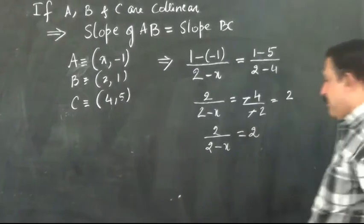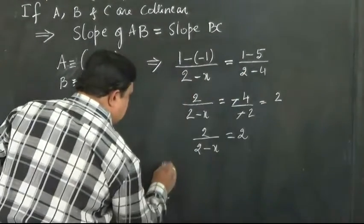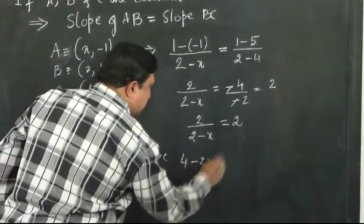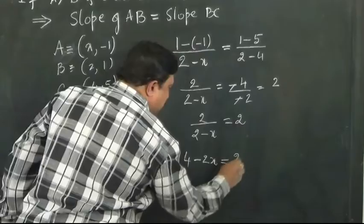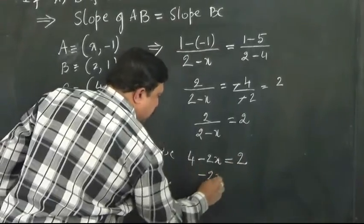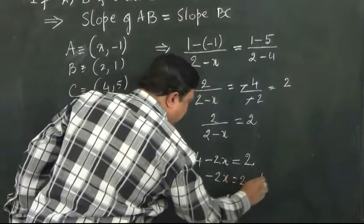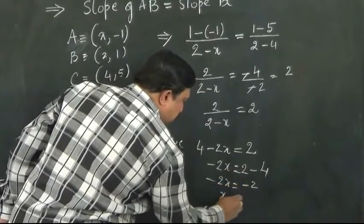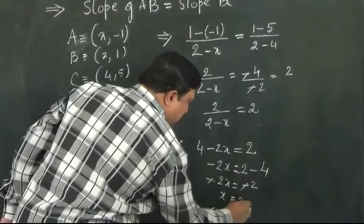Cross multiply it and you can find the value of x. That is 2 times 2 equals 4. Minus 2 times x, 2x equals 2, or -2x equals 2 minus 4, or -2x equals -2, therefore x is equal to 1.